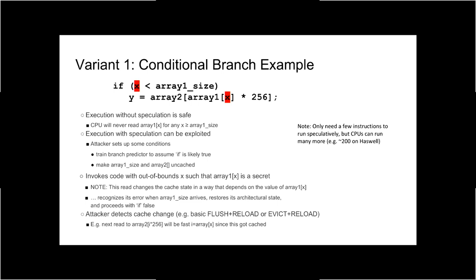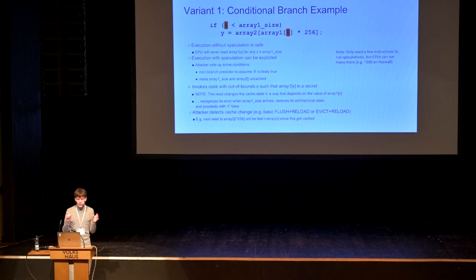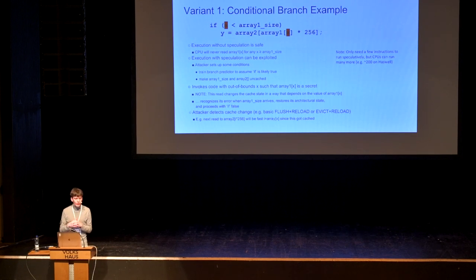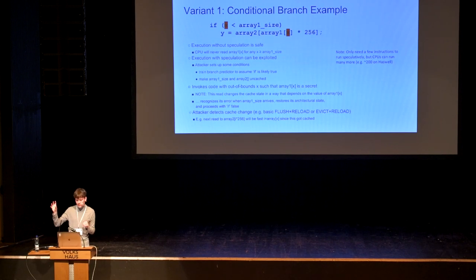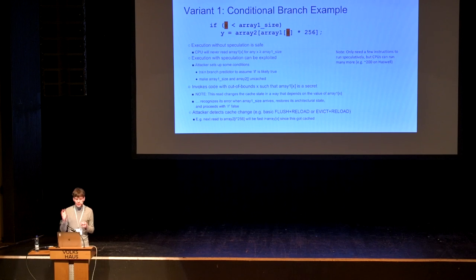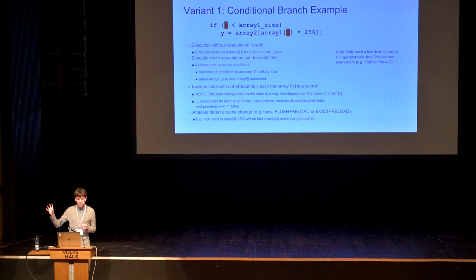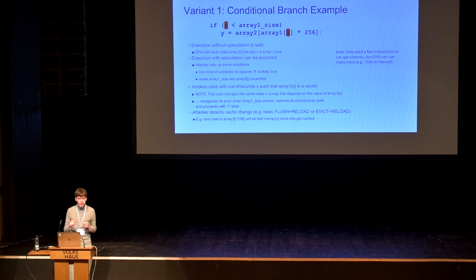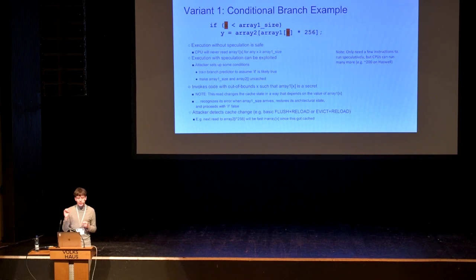In these transient instructions you will have an out-of-bounds memory access into the first array — reading memory that belongs to something completely else in your process. You then multiply that value by 256 and use it as an index into a second array from which you read. Every distinct value at that out-of-bounds position maps to a different cache line in array 2, which means you can later leak exactly what the value was by measuring which cache line in array 2 becomes fast.